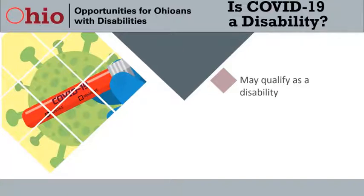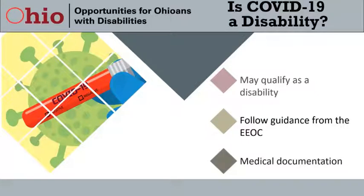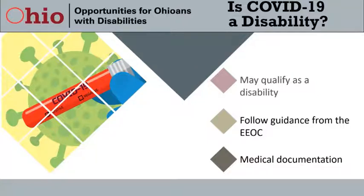To make this determination, the employer would follow the same EEOC guidance to determine whether the individual's impairment rises to the level of a disability, just as the employer would do with any accommodation request. When the disability or the need for the accommodation is not obvious, the employer is permitted to request medical documentation from an appropriate treating source. The guidance is the same for verifying a disability exists no matter what the condition is.